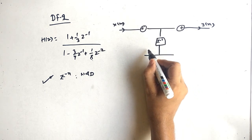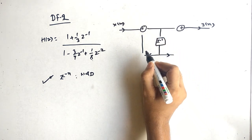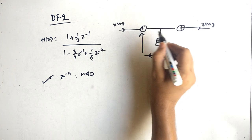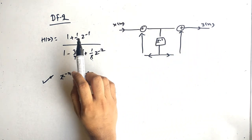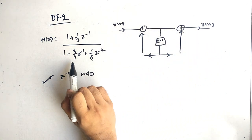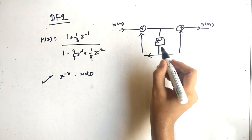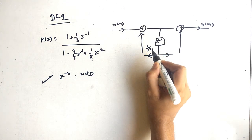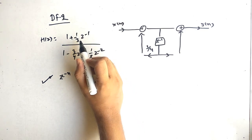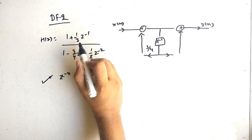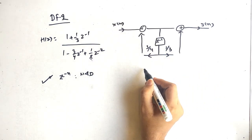Here we will have poles, and here we will have zeros. For the pole the multiplier is minus 3/4, so we take the negative value of that, which means it would be 3/4. For zeros the coefficients remain as-is, so 1/3 will remain as 1/3.